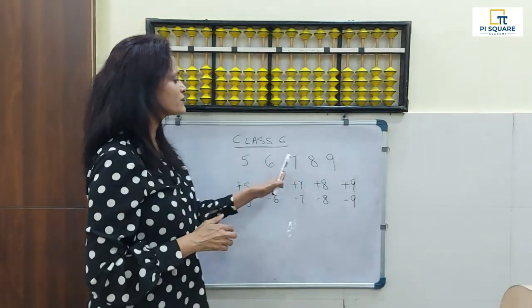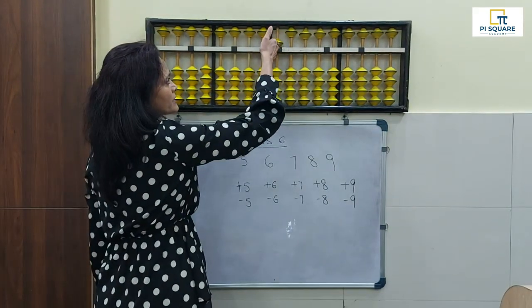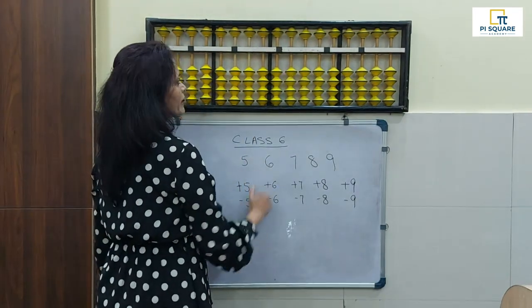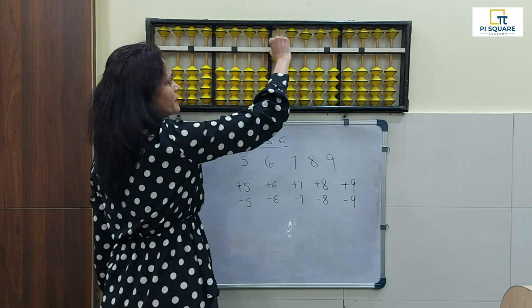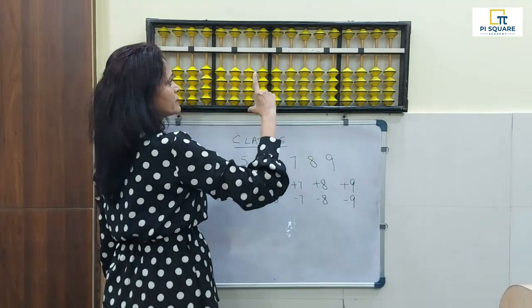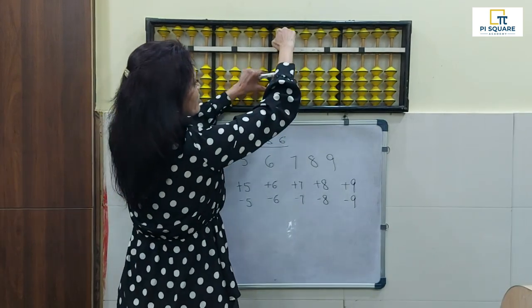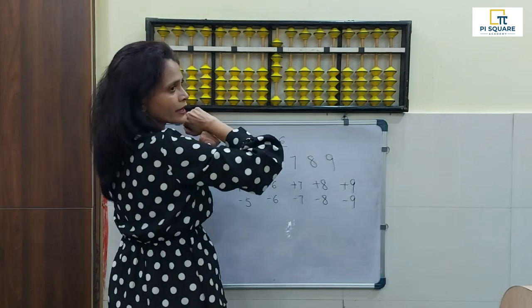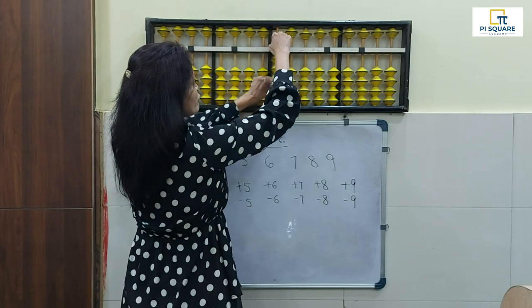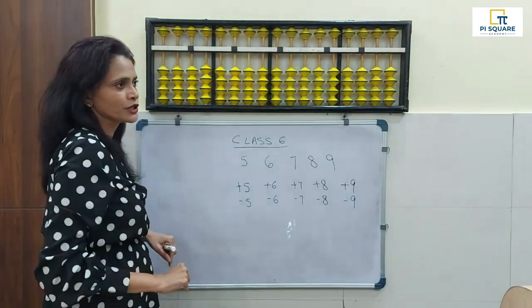So plus 5, minus 5 where we use only the index finger. Plus 6, minus 6 where we use the index and the thumb. Plus 7, again we use the index and the thumb—5 and 2. And for 8, 5 and 3. Minus 8, 5 and 3 go away. Plus 9, 5 and 4. And minus 9, 5 and 4 go away from each other.